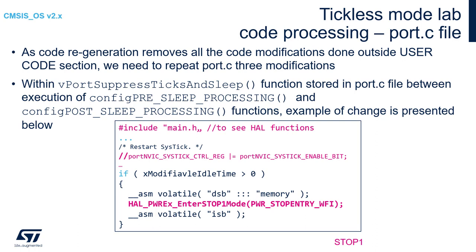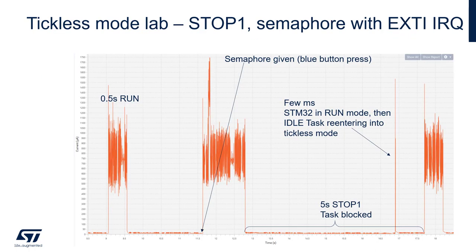Then we can connect the multimeter or XNucleo LPM01A board to measure current consumption while the application is working. Please reset the board and observe the current consumption flow over time. Here we can see the situation when the semaphore was released from the interrupt — our blue button — before the specified timeout elapsed. At the beginning the system is in stop mode, and just after 9 seconds the system wakes up. Task 1 is moved from blocked to run state as the specified timeout elapsed within osSemaphoreAcquire.